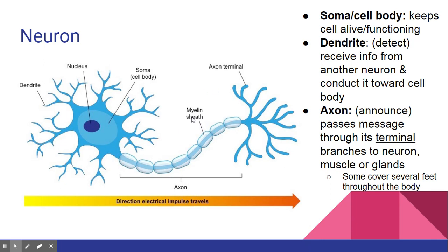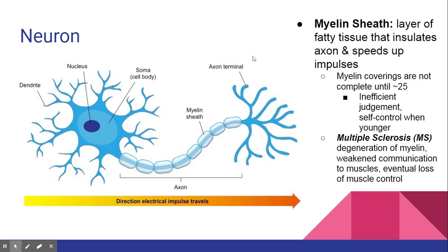The myelin sheath is one that pops up quite a bit in questions. It's like a fat blanket — fatty tissue that insulates your axon so signals can travel faster. The more myelin sheath you have, the faster you are able to process information. This is a big reason why most people are not at their cognitive peak until their mid to late 20s. Women peak in their early to mid 20s; men are not finished myelinating until 29 or 30 on average.